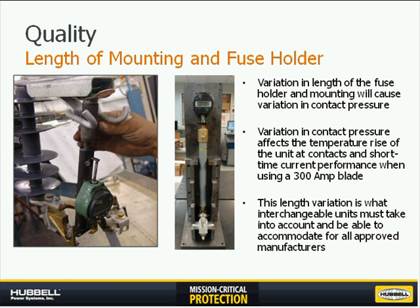This gauge length is 100% checked on all Chance units in production. Every cutout coming off the line, before grease is applied to the top contact, has this gauge tool put in it in both our Juarez and Wuhu plants. This is based on studies we've done with other manufacturers to ensure that the variation in fuse holder length will accommodate the mounting length. On the right photo you'll see a gauge checking the length of the fuse holder — just like the mounting, this is critical for our fuse holder to maintain continuous current operation and momentary ratings when using a 300 amp blade.